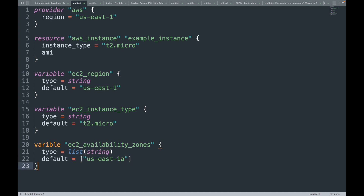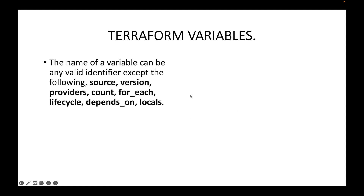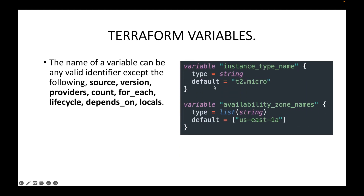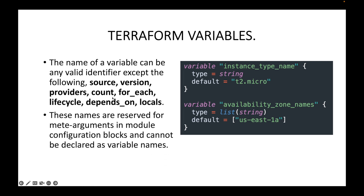The name of your variable can be any valid identifier except the following reserved words: source, version, providers, count, for_each, lifecycle, depends_on, and locals. Avoid using these identifiers as the label or name for your variable. These names are reserved for meta-arguments in module configuration blocks and cannot be declared as variable names.